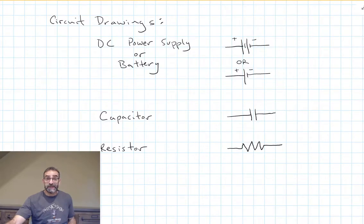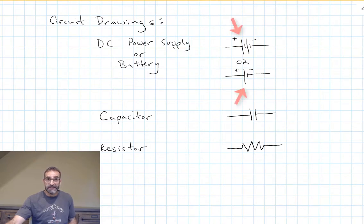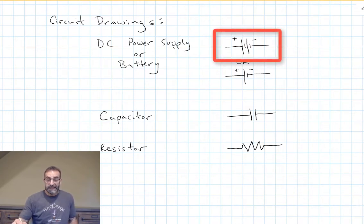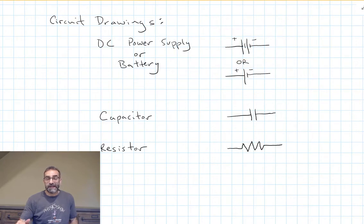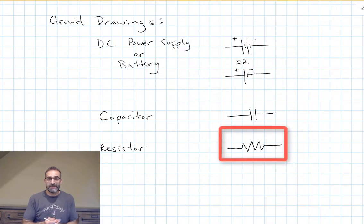We're going to start drawing a lot of circuits, so we need to understand what symbols we use to represent all of our electrical devices. A DC power supply or battery can be represented with one of these drawings. The long line indicates the higher potential side — the positive terminal. I'll try to draw it like the top one, because the bottom one starts to look a lot like the symbol for a capacitor. The symbol for a capacitor is two parallel lines, like a parallel plate capacitor. We also have resistors in our circuit — this is the symbol for it, and that's how we represent it in our circuit drawings.